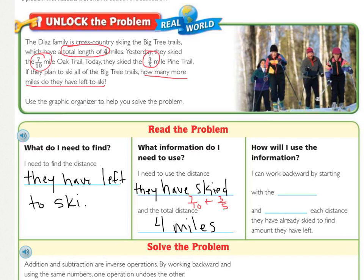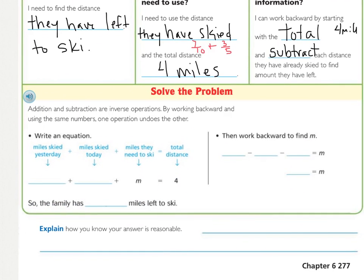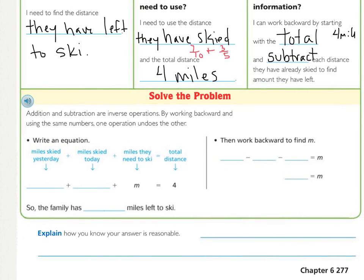Now that we have our information, how are we going to use it? Our strategy is to work backwards. By working backwards, we start with the total — the 4 miles — and then we subtract each distance they have already skied to find out what they have left. Addition and subtraction are inverse operations. By working backwards and using the same numbers, one operation undoes the other.